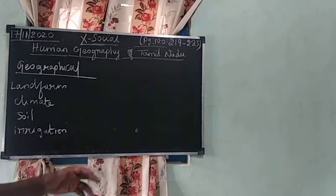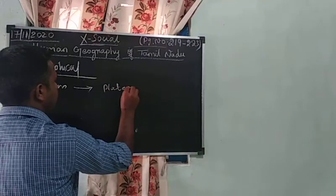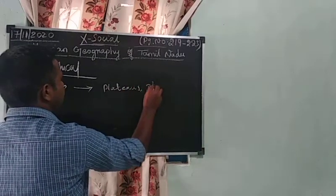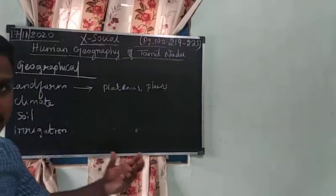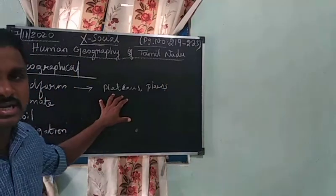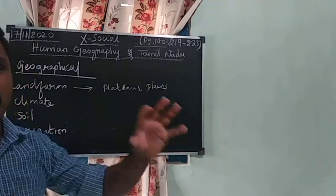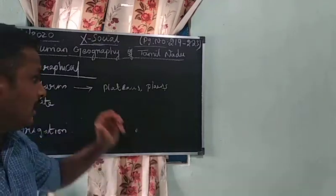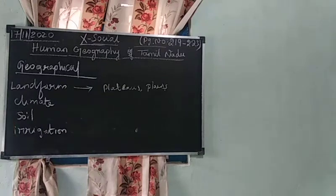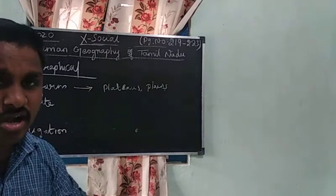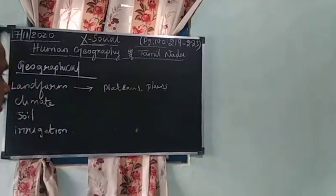From the previous class, we studied different types of landforms: plateaus, plains, and mountains. Based on the landform, we cultivate different crops. For example, the plain area is suitable for sugarcane, and the mountain area is suitable for tea or coffee.